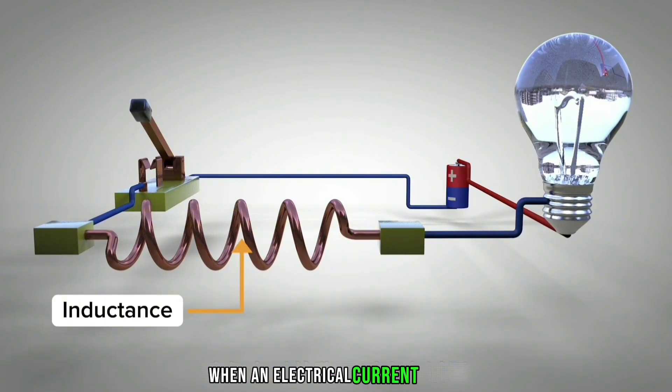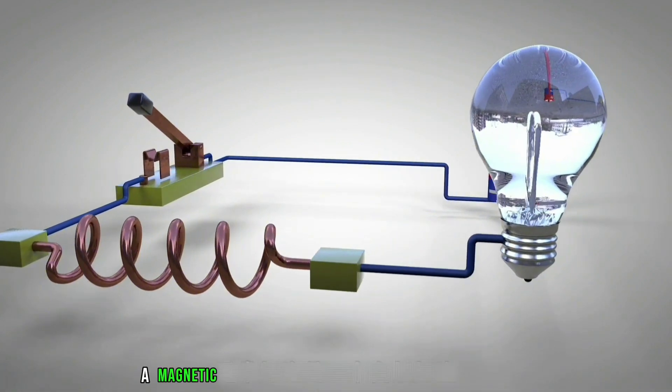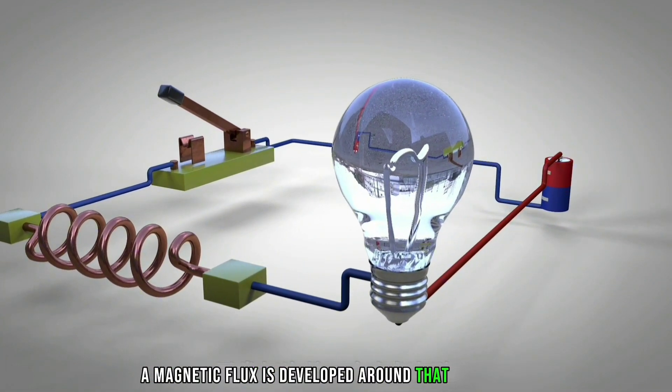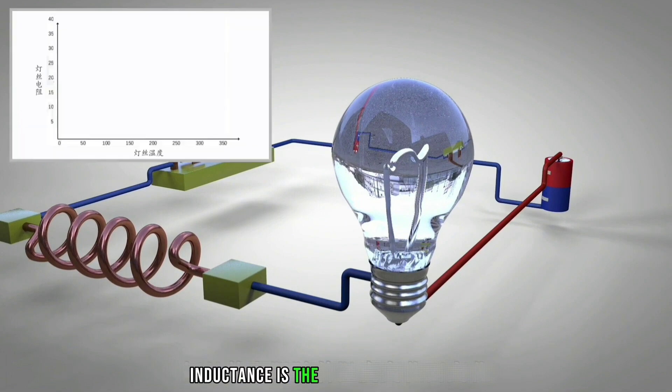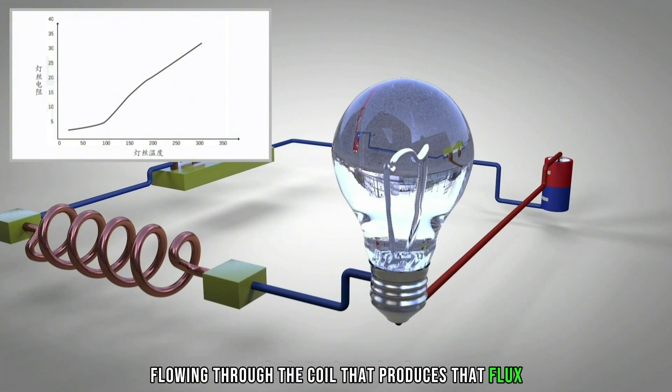When an electrical current flows through a wire conductor, a magnetic flux is developed around that conductor. Inductance is the ratio of the magnetic flux in the coil divided by the electric current flowing through the coil that produces that flux.